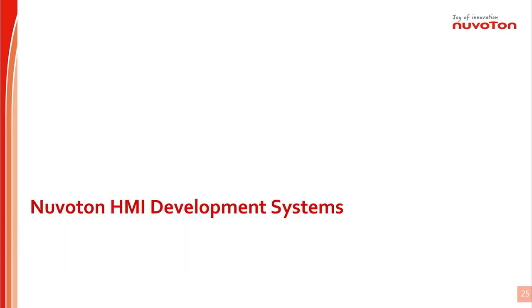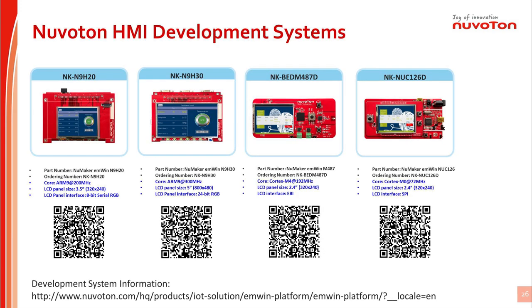Nuvoton HMI development systems: Nuvoton provides four development systems for HMI microcontrollers, including NK-N9H30, NK-N9H20, NK-NuBMD-N487D, and NK-NUC126D. More detailed information is on the Nuvoton emWin web page, with the link shown at the bottom of this page.